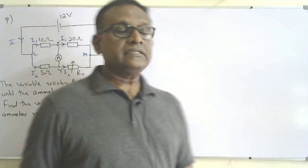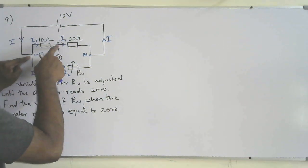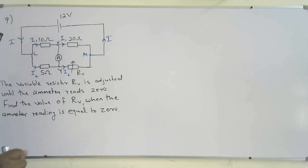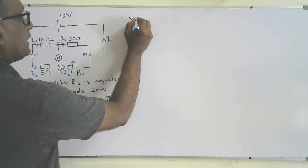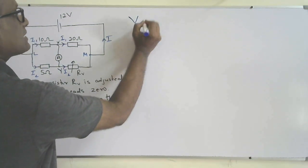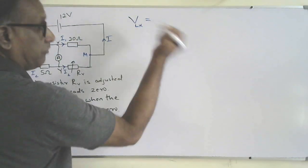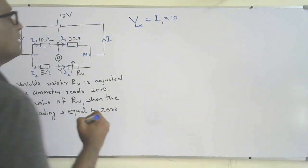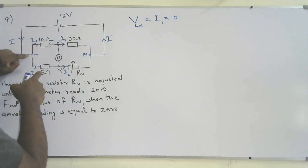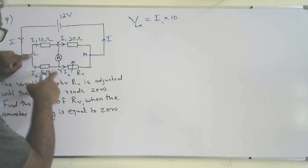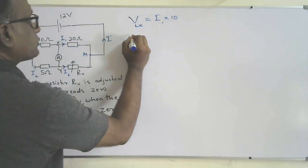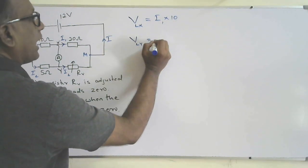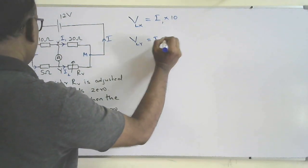Current i1 flows from L to X due to the potential difference between L and X, so V_LX equals i1 times 10. Similarly, current i2 flows from L to Y due to the potential difference between L and Y, so V_LY equals i2 times 5.